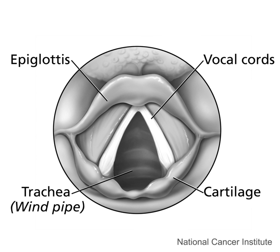Speech sounds are generally produced by the modification of an airstream exhaled from the lungs. The respiratory organs used to create and modify airflow are divided into three regions: the vocal tract, the larynx, and the subglottal system. The airstream can be either egressive or ingressive. In pulmonic sounds, the airstream is produced by the lungs in the subglottal system and passes through the larynx and vocal tract. Glottalic sounds use an airstream created by movements of the larynx without airflow from the lungs. Clicks or lingual ingressive sounds create an airstream using the tongue.